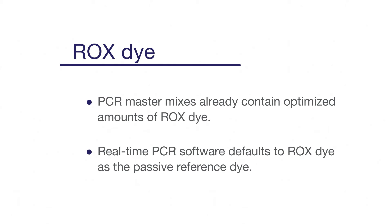Otherwise, the software will attempt to normalize to a dye that's not there — not a good thing. Alternatively, if you need to use a different passive reference for multiplexing purposes, like Applied Biosystems' Mustang Purple dye, you can select another option within the software.